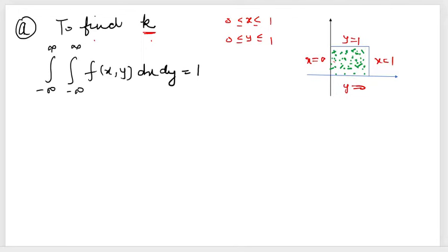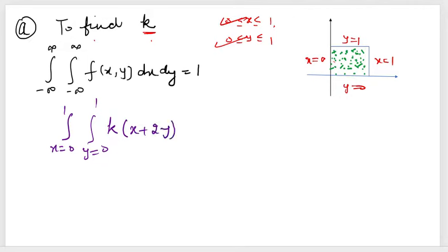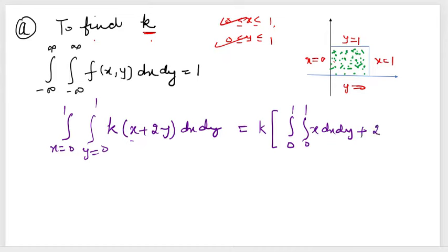Since f(x, y) = k(x + 2y) and is valid only for x from 0 to 1 and y from 0 to 1, we set up: k times the double integral from 0 to 1 in both x and y of (x + 2y) dx dy equals 1. We can open the brackets and integrate the two terms separately.